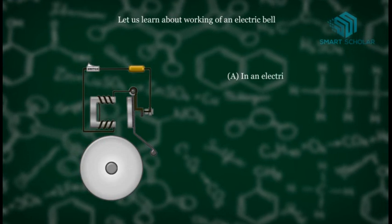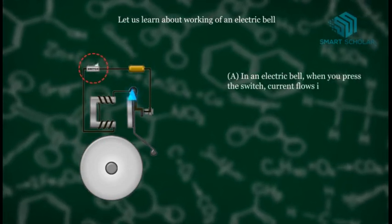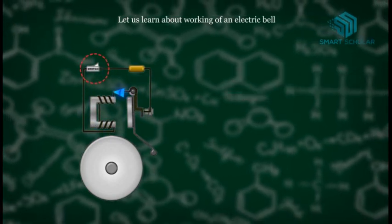A. In an electric bell, when you press the switch, current flows in the coil, creating an electromagnet.